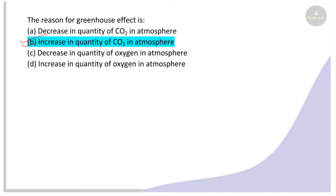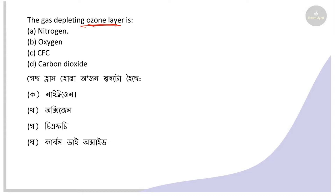When carbon dioxide increases, the greenhouse effect occurs. Next: Which gas is depleting the ozone layer? The options include carbon dioxide and CFC. The right answer is CFC — chlorofluorocarbon. CFC used in refrigerators depletes our ozone layer.